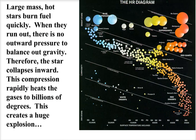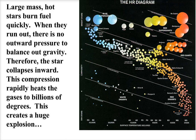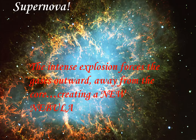What happens to other stars when they run out of energy? Large, massive, hot stars burn fuel really quickly. When they run out, there's no longer any outward pressure to balance gravity, so without that outward pressure — like the balloon compressed by liquid nitrogen — the star collapses inward. But this collapse heats up the star to billions of degrees and it eventually explodes to form a supernova. A supernova is an intense explosion that forces all the gases outward away from the core and creates a brand new nebula. This is the death of a star, but it causes the birth of many more new stars in that nebula.